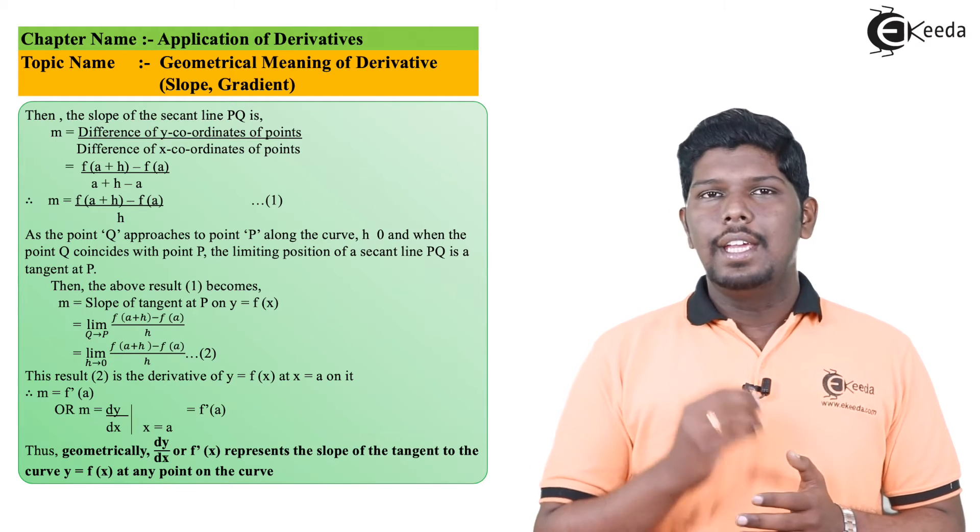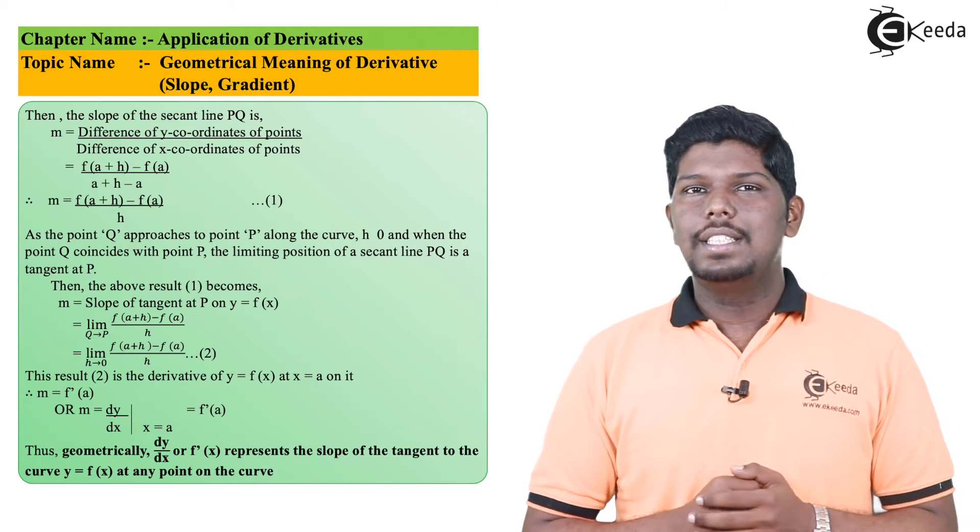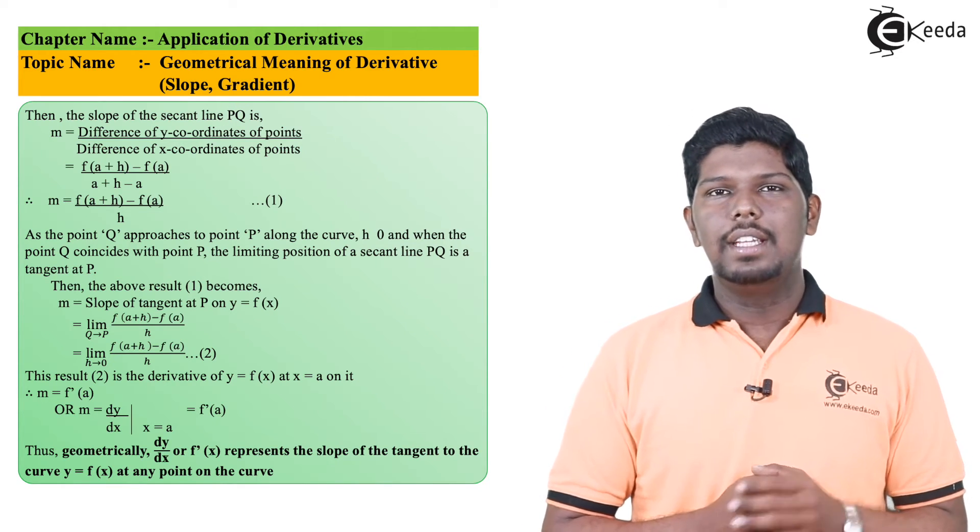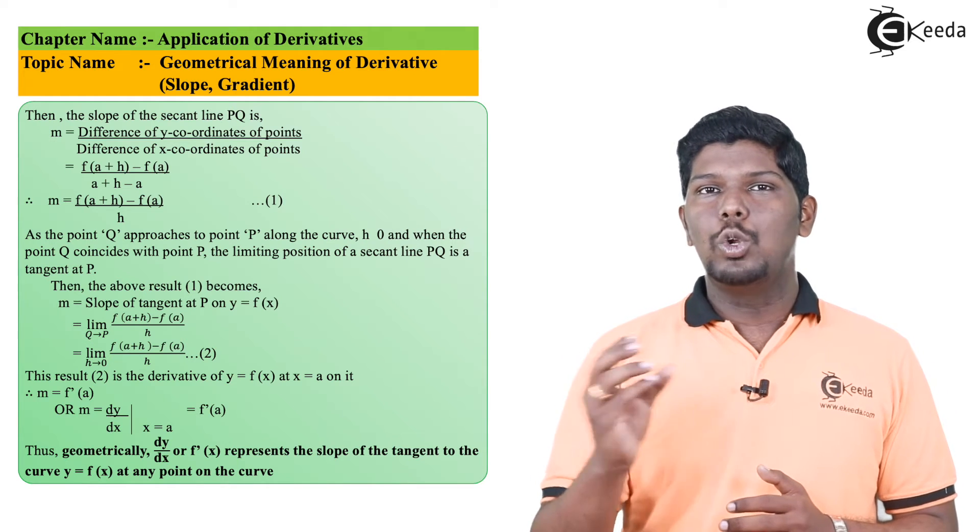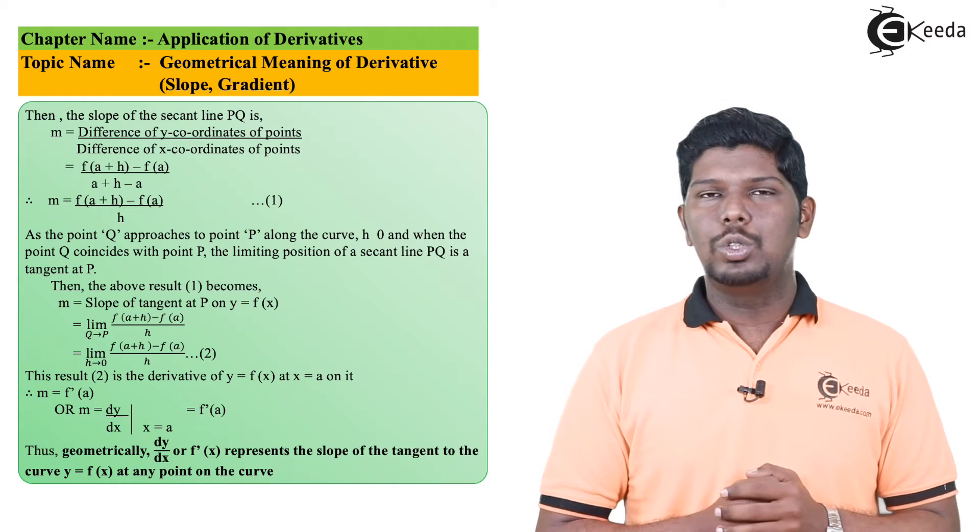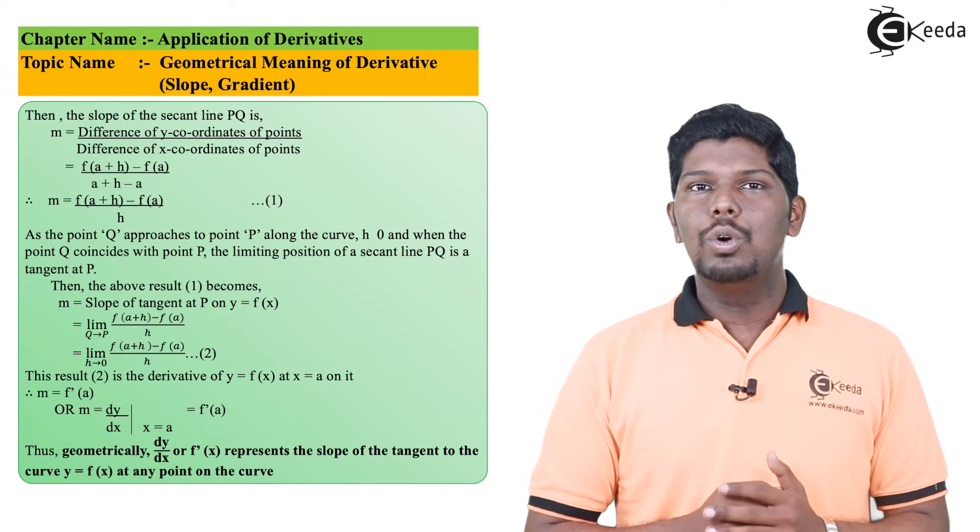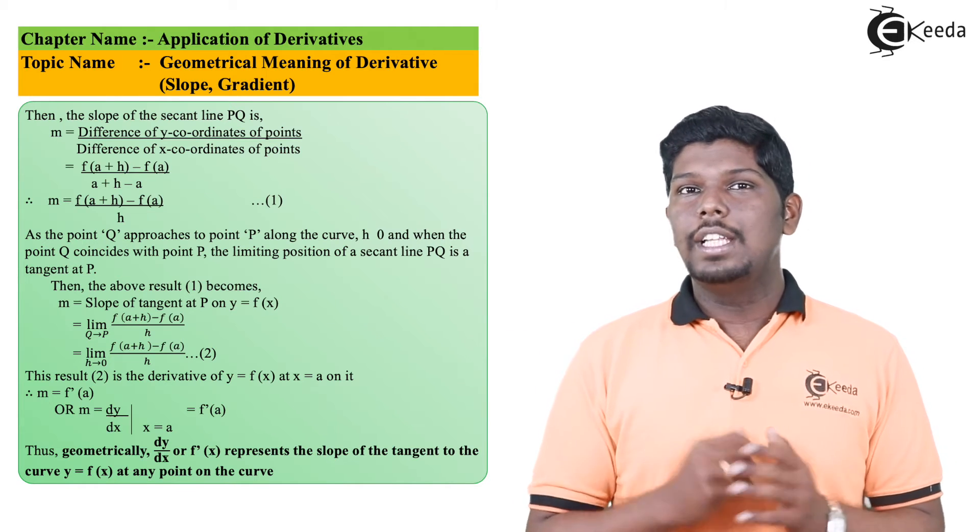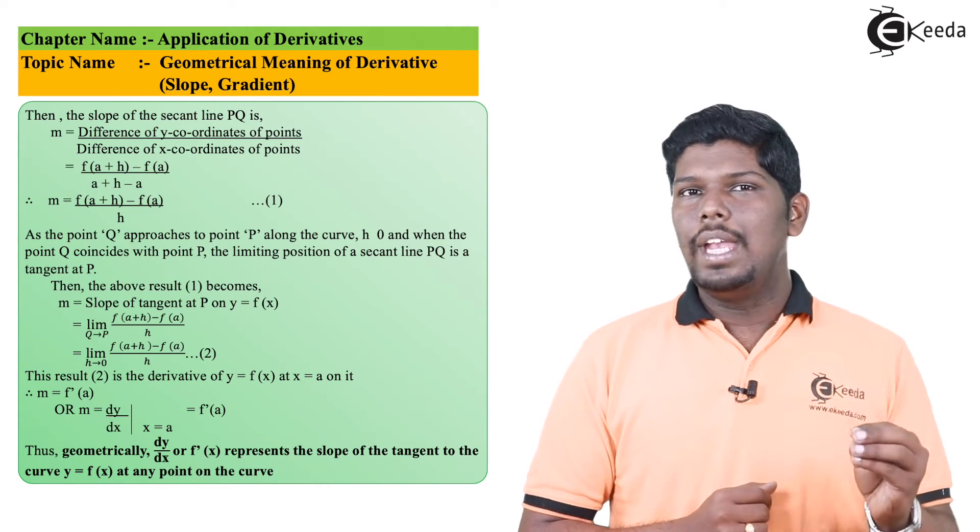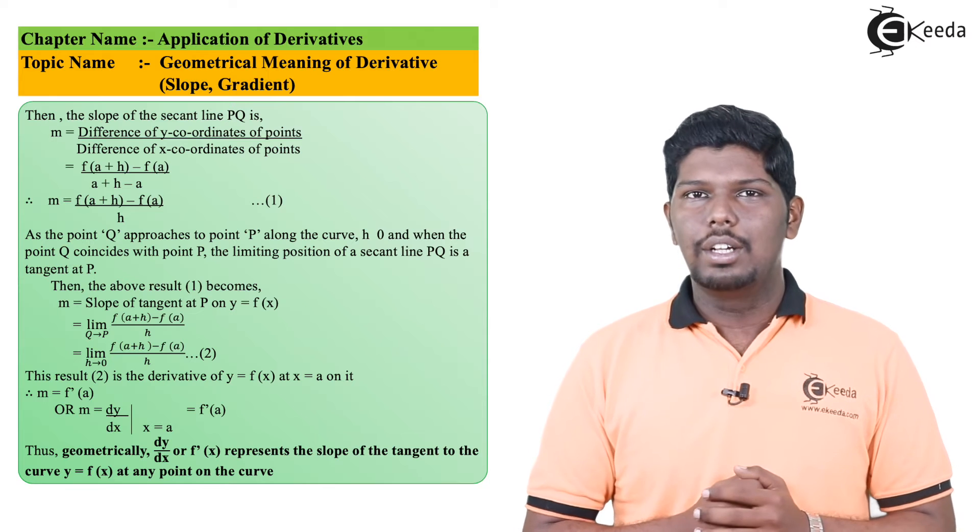So for the formula of slope, if I say limit where h is tending to 0 for [f(a+h) - f(a)]/h, that is nothing but slope of a tangent. Specifically, it becomes a slope of tangent. And in the earlier videos of derivatives also we have seen, according to Leibniz, limit h tending to 0 of [f(a+h) - f(a)]/h was nothing but dy/dx. So whenever we find dy/dx, that will be the slope of tangent for that curve.